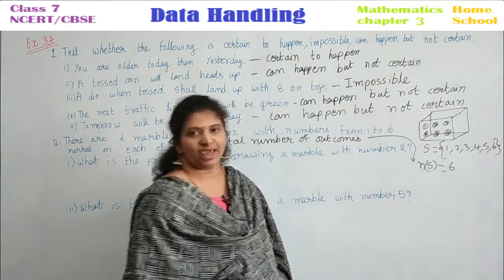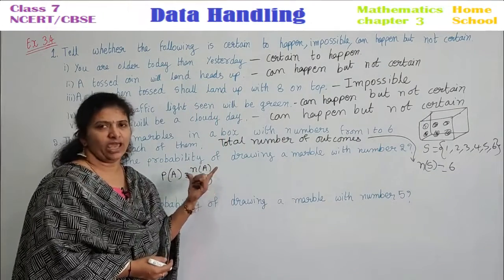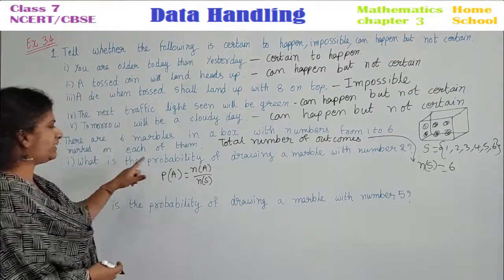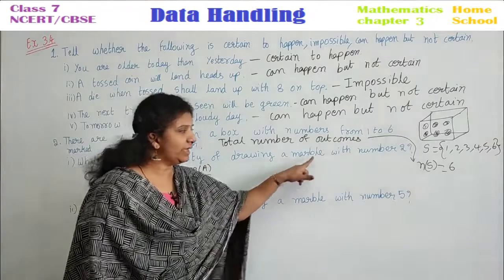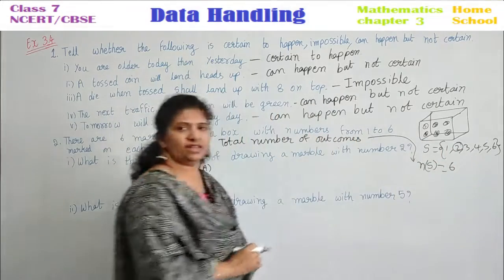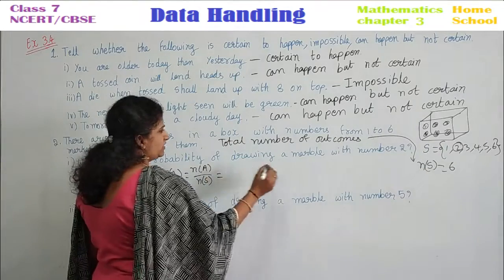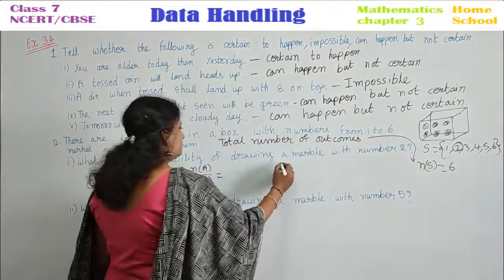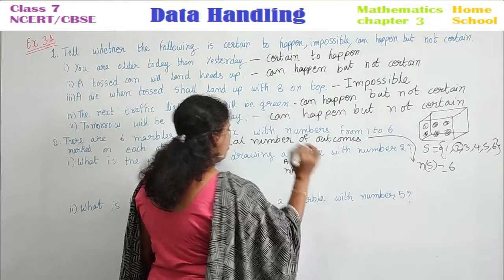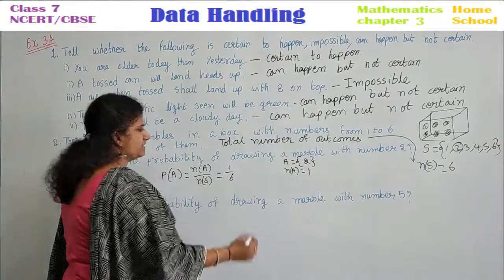Let S equal to the sample space — what are all the numbers you have? One, two, three, four, five, six. Total number of outcomes N of S is equal to six. Now, N of A — what is the question asked? What is the probability of drawing a marble with number two? How many marbles with number two are there? Only one. So N of A is equal to one. Apply here: P of A equals one by six — that is your answer.